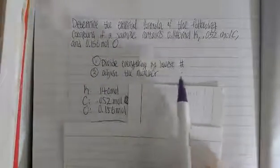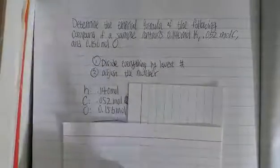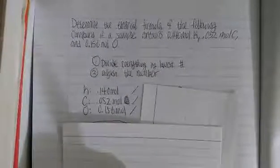Now, first of all, divide everything by the lowest number. And the lowest number out of the three would be carbon, so divide everything by carbon.